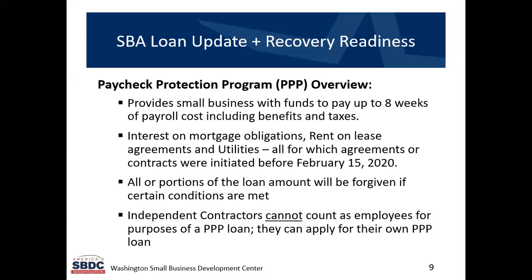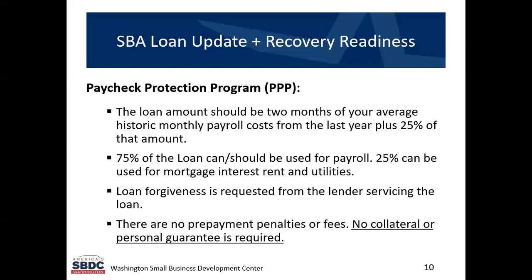If you're a company that has independent contractors, you cannot use your independent contractor expense to count towards payroll. Independent contractors can go apply for the PPP on their own because they're considered a business. The loan amount is going to be two months of your average payroll plus an additional 25 percent. They want to make sure that at least 75 percent of these loans are used towards payroll, and 25 percent can be used on mortgage interest, rents, and utilities.